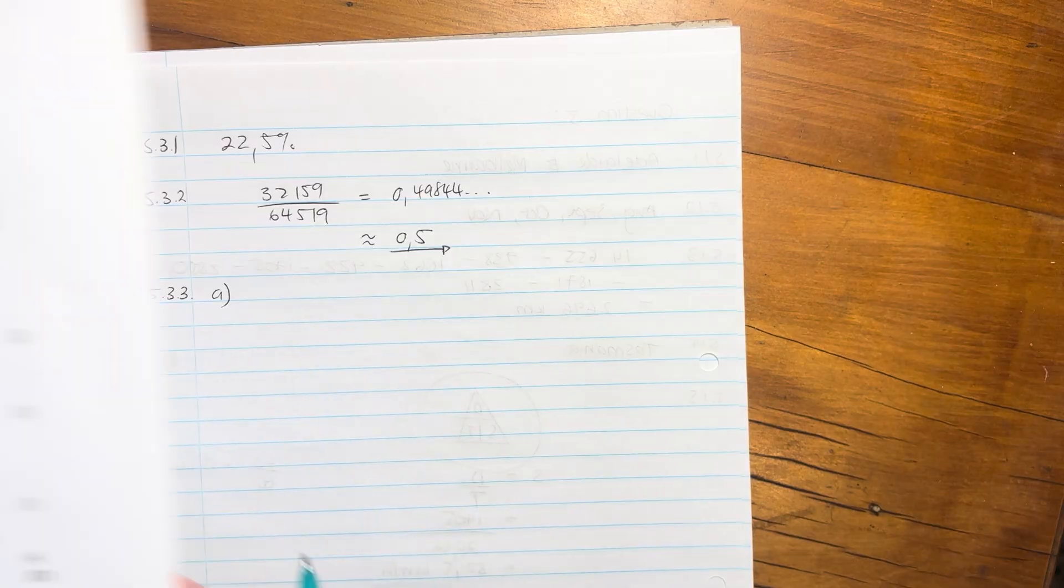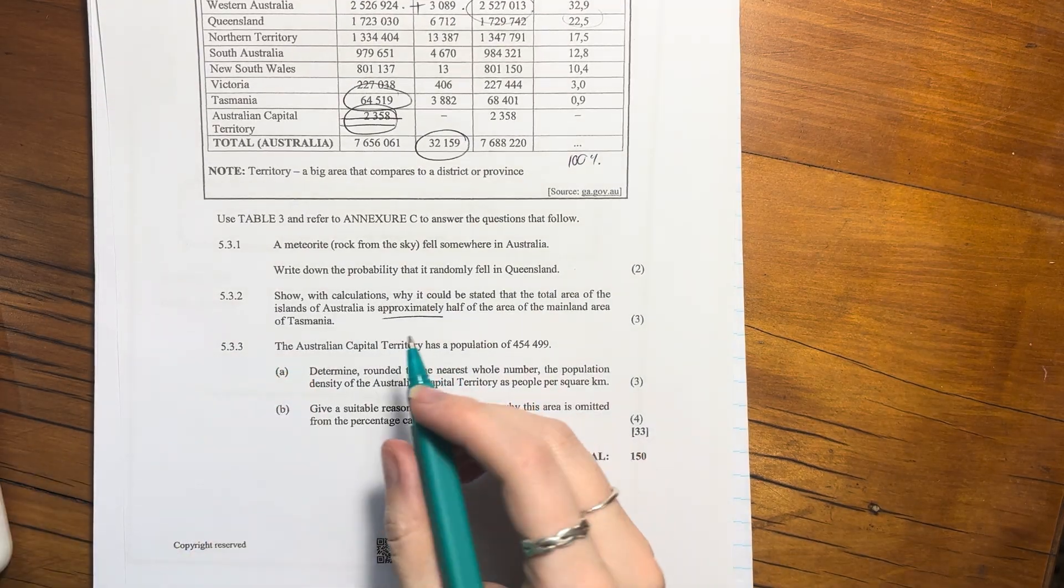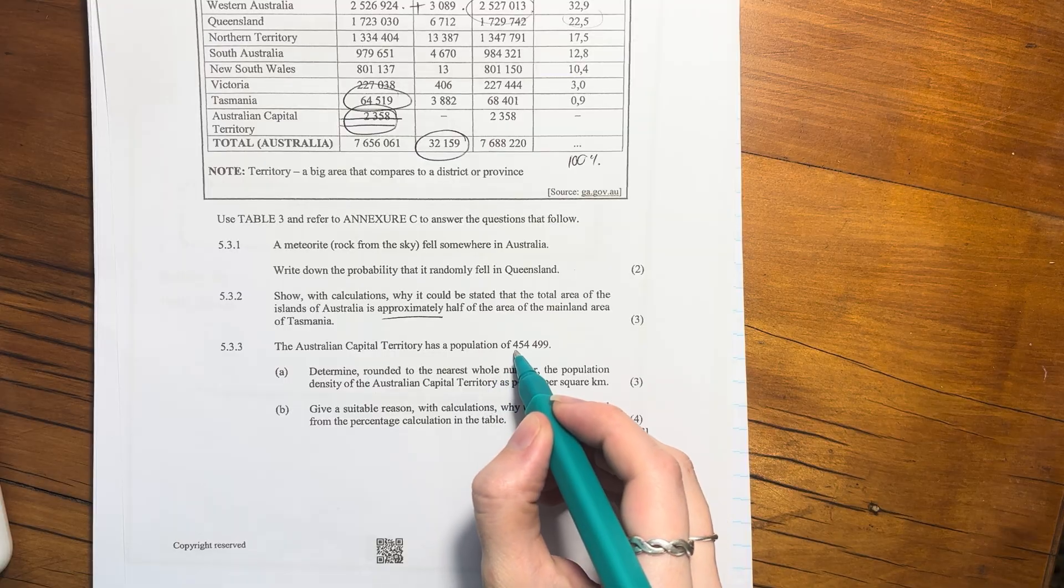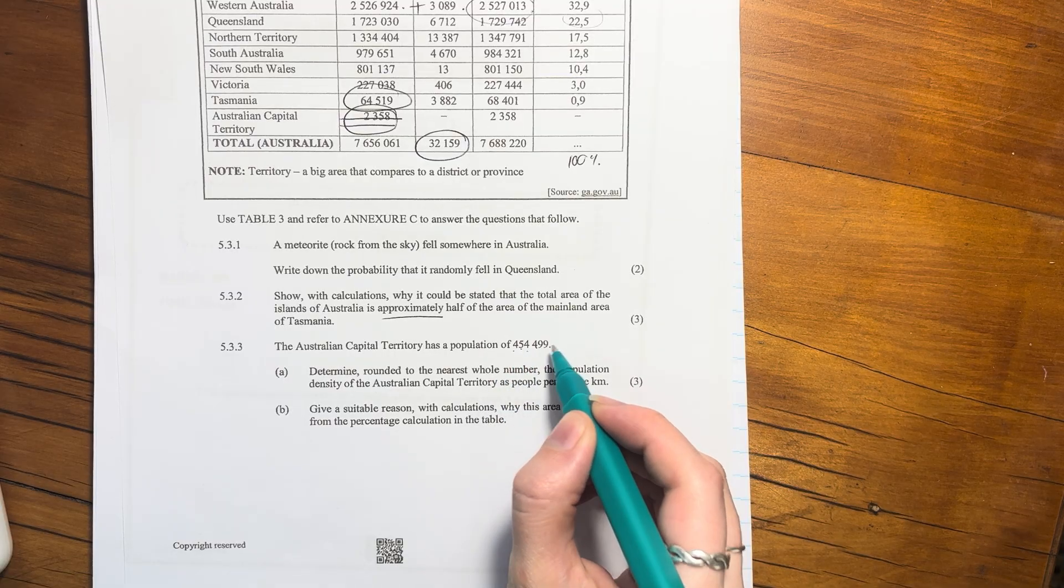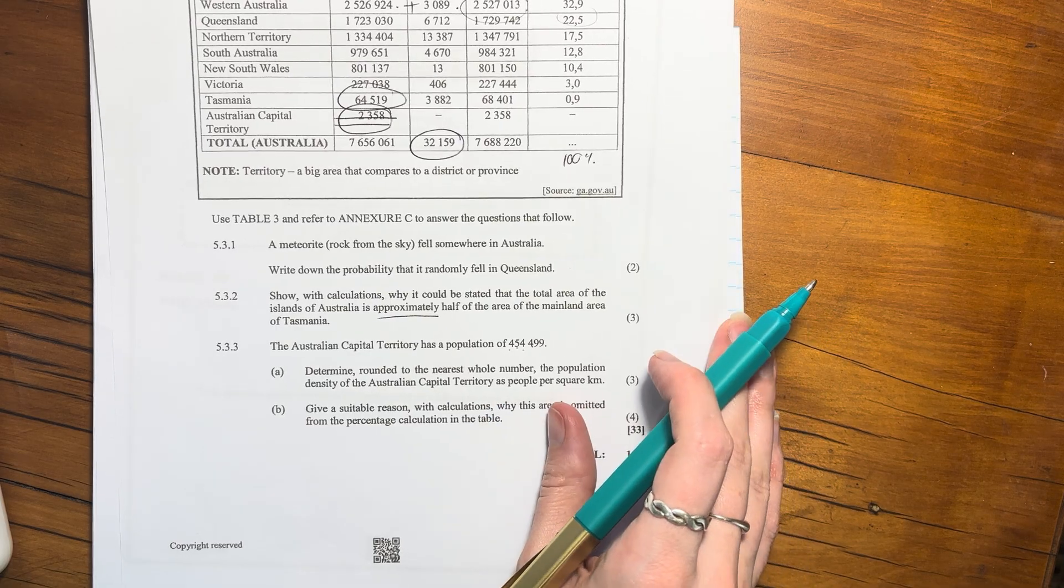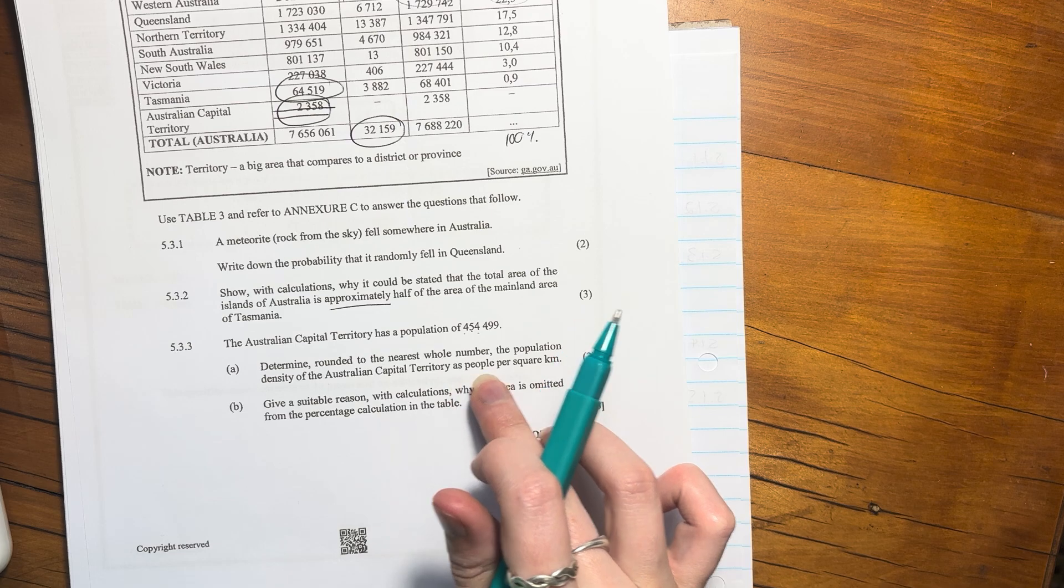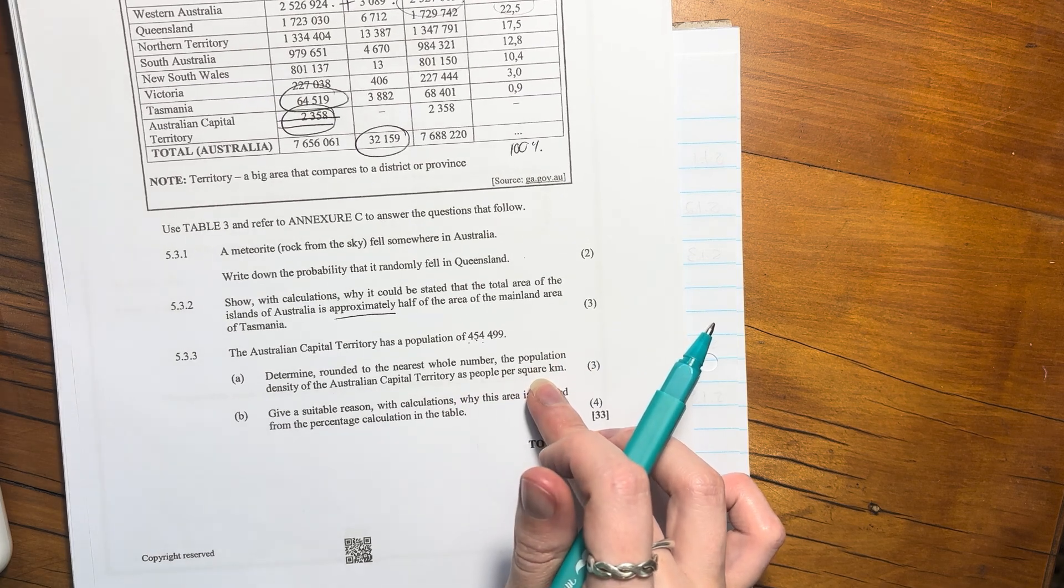So we're sorted there. We're on to our last question, which is two subparts. So let's just read those carefully. The Australian Capital Territory has a population of 454,499. Determine, rounded to the nearest whole number, the population density of the Australian Capital Territory as people per square kilometre.